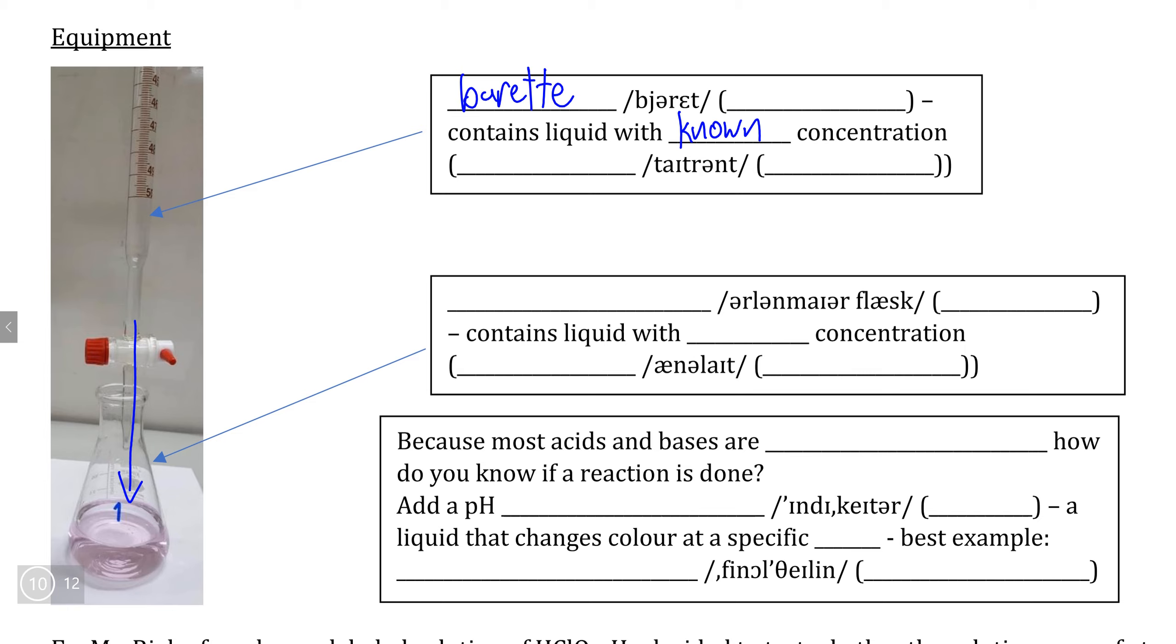The solution where we know the concentration is what we call the titrant, hence why we refer to this procedure as titration. Inside the bottom piece of glassware, which is what we call an Erlenmeyer flask, we store the solution that has our unknown concentration.